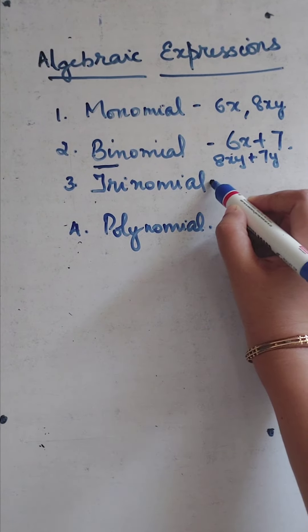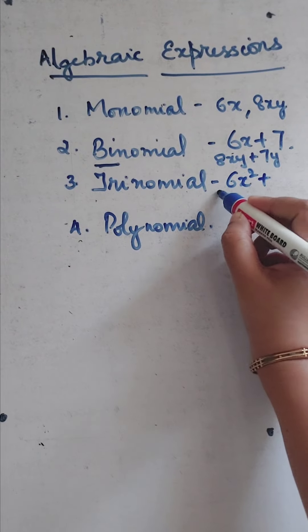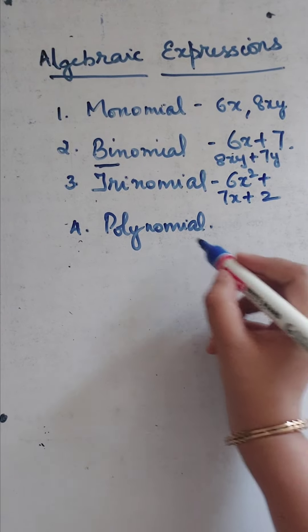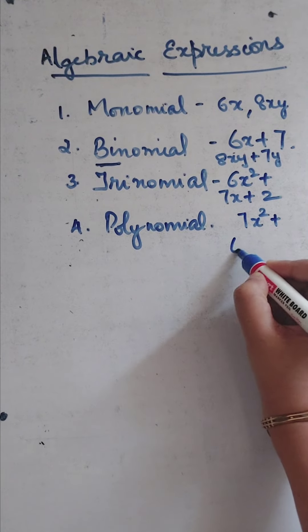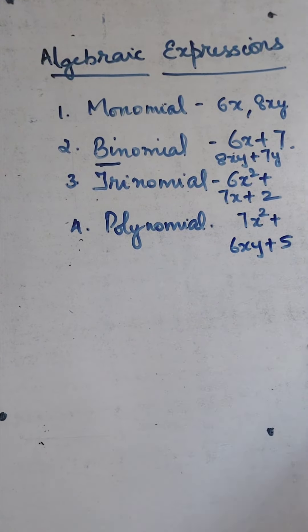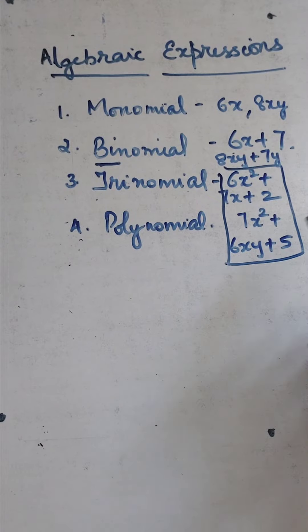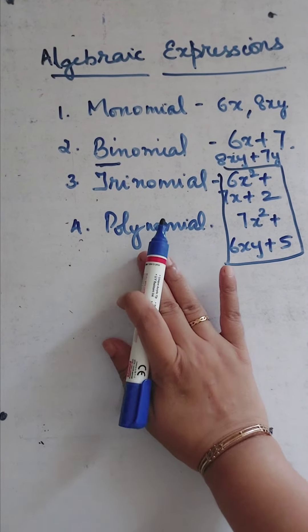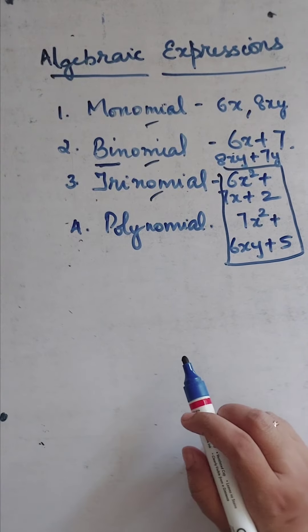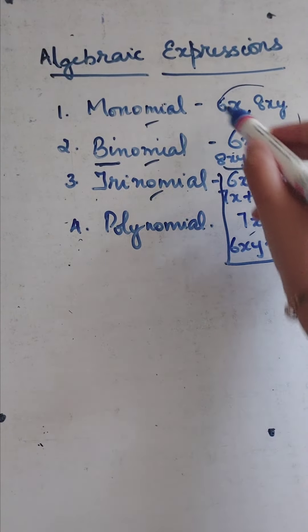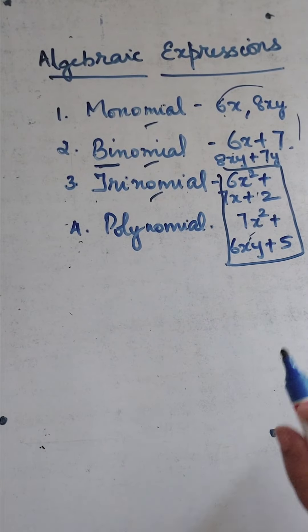The third one is trinomial expression. Trinomial means we will have three terms — for example, 6x plus 7x plus 2, or 7x squared plus 6xy plus 5. These are trinomial expressions with three terms. Polynomial means either it will be monomial, binomial, or trinomial — that is, it will have one or more than one term. So all these are examples of polynomial expressions.